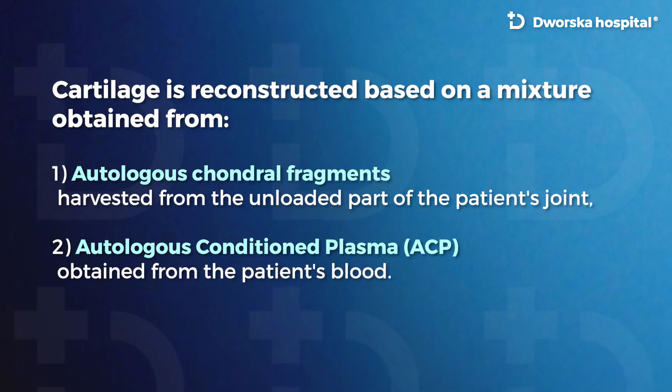Cartilage is reconstructed based on a mixture obtained from autologous chondral fragments harvested from the unloaded part of the patient's joint, and autologous conditioned plasma (ACP) obtained from the patient's blood.